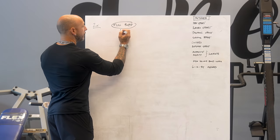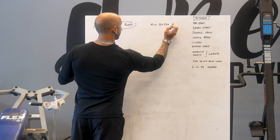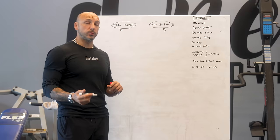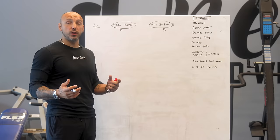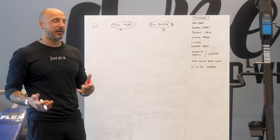When designing programs, first you decide the template. For a two-day-a-week schedule, we're almost always going to do full body — Full Body A and Full Body B. For most people training twice a week, full body is going to be the way to go.